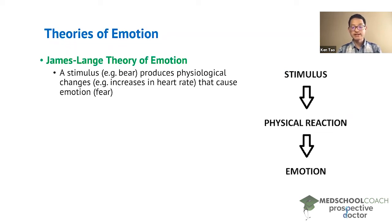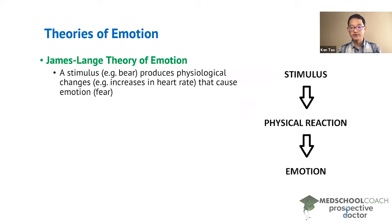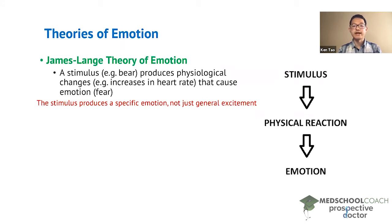As an example, you can have a stimulus like a bear jumping out at you that will produce a physiological change such as an increase in your heart rate, that will cause the emotion fear. It's important to note here that the stimulus produces a specific emotion, not just general excitement.